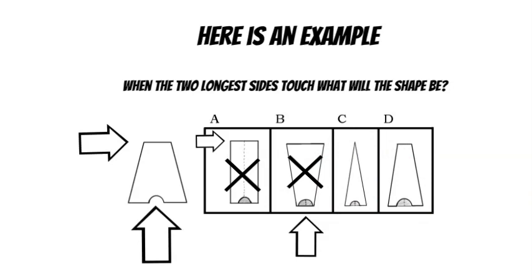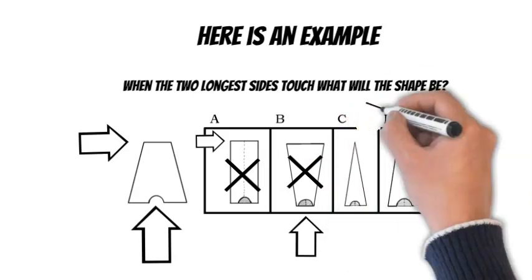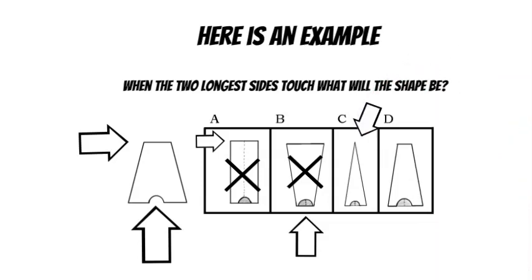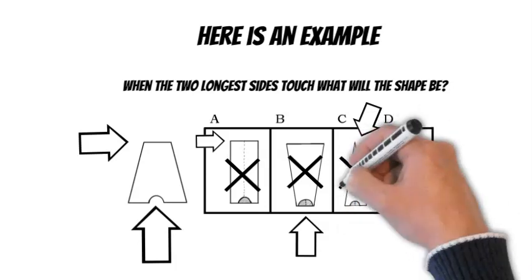That leaves choices C and D. Looking at choice C, the shape comes to a sharp point. This is impossible with the given shape, so choice C can be eliminated.